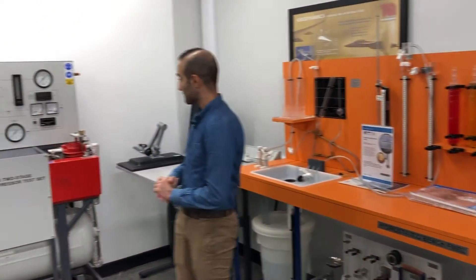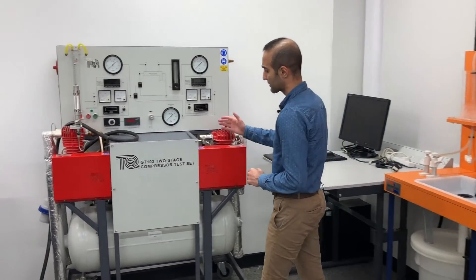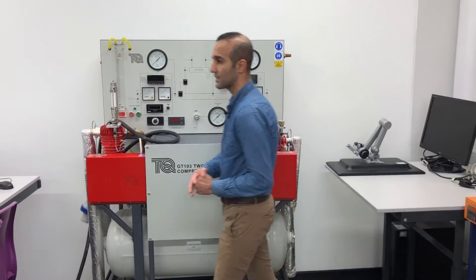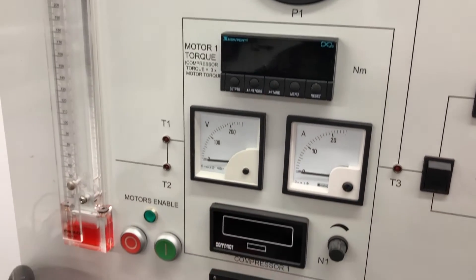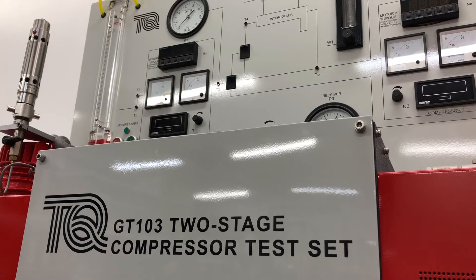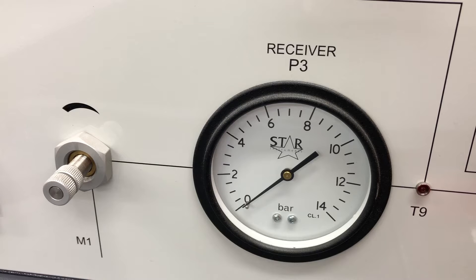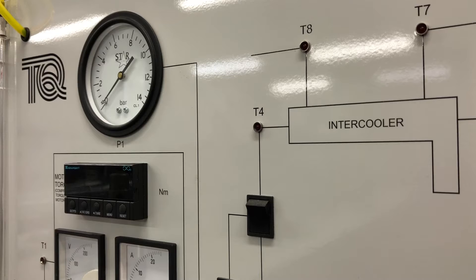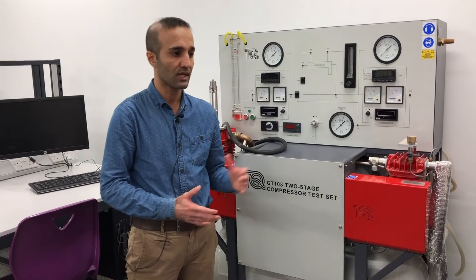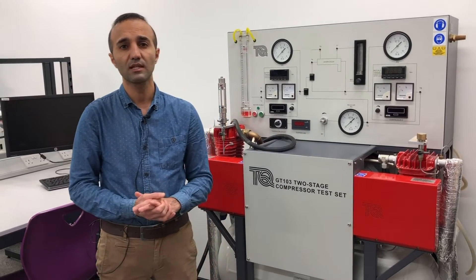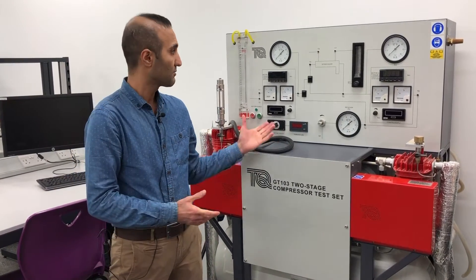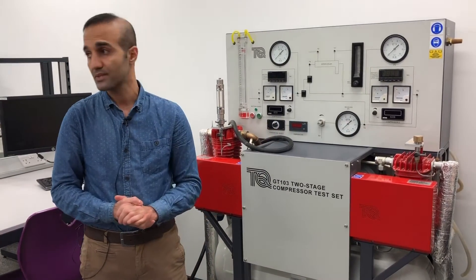Then we have this two-stage compressor test that we mainly use for thermodynamic concepts. With the help of this apparatus we test how the compressor works in two stages and how intercooling helps the system to get cooled down and improve the performance of the system, which mainly deals with level 4 and level 6 for thermodynamic purposes.